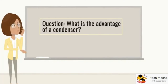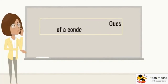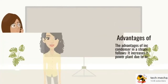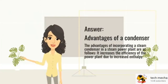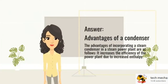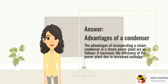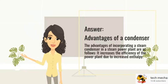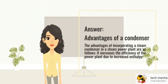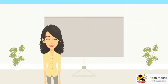What is the advantage of a condenser? The main advantages of incorporating a steam condenser in a steam power plant are as follows. It increases the efficiency of the power plant due to increased enthalpy drop. It reduces the back pressure of the steam, which results in more work output.